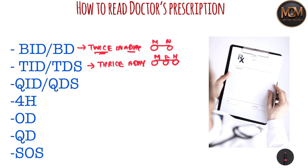Let's talk about QID or QDS. It means you have to take that medicine every six hours, or four times in a day. It can also be written as four times: morning, afternoon, evening, and night.